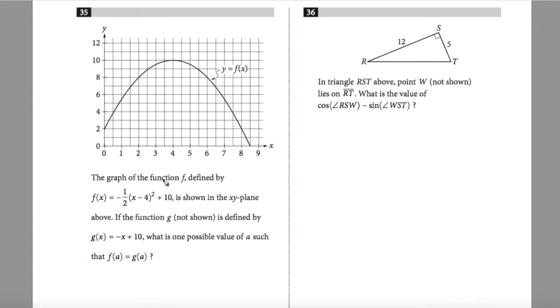Question 35, here I'm given a large graph. The graph of the function f defined by f(x) equals negative one-half (x minus 4) squared plus 10 is shown. If the function g is defined by g(x) equals minus x plus 10, what is one possible value of a such that f(a) equals g(a)? Well, if f(a) equals g(a), then I can simply plug these in. So f(a) would be minus one-half times (a minus 4) squared plus 10, and my g(a) is going to be negative a plus 10. I immediately can take out my 10s by subtracting 10 on either side.